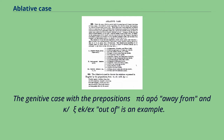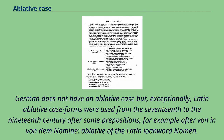The genitive case with the prepositions apo ('away from') and ex ('out of') is an example. German does not have an ablative case, but exceptionally, Latin ablative case forms were used from the 17th through the 19th century after some prepositions — for example after von and von dem, as the ablative of the Latin loanword nomen.